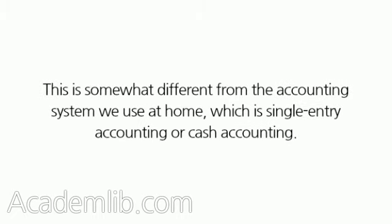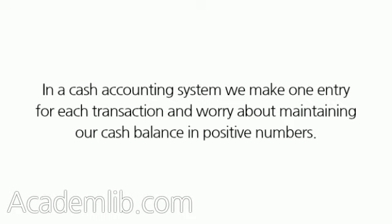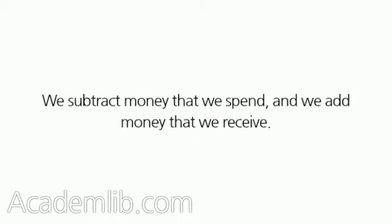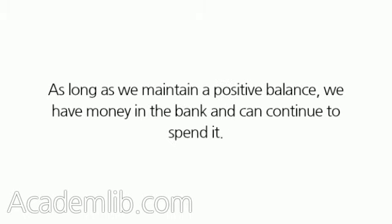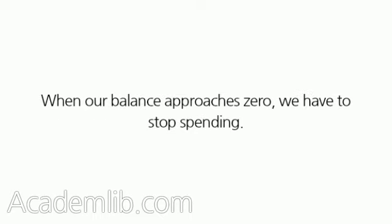This is somewhat different from the accounting system we use at home, which is single-entry accounting or cash accounting. In a cash accounting system we make one entry for each transaction and worry about maintaining our cash balance in positive numbers. We subtract money that we spend, and we add money that we receive. As long as we maintain a positive balance, we have money in the bank and can continue to spend it. When our balance approaches zero, we have to stop spending.